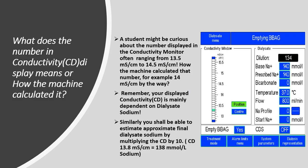A student might be curious about the number displayed in the conductivity monitor, which usually ranges from 13.5 to 14.5 millisiemens per centimeter. For example, if the machine displays a calculated conductivity of 14 millisiemens per centimeter, what exactly does it mean, and how did the machine calculate that value?